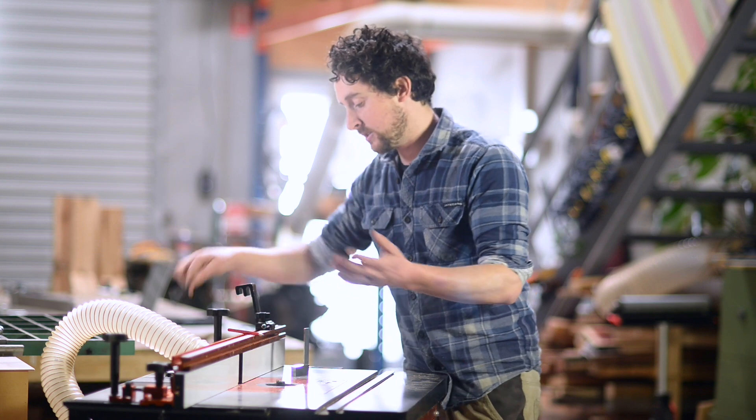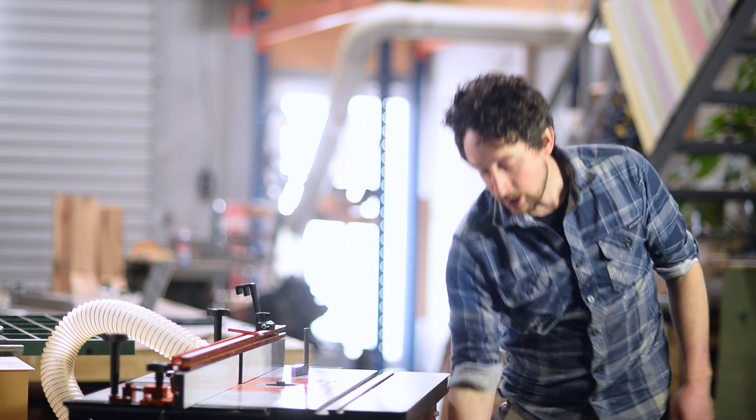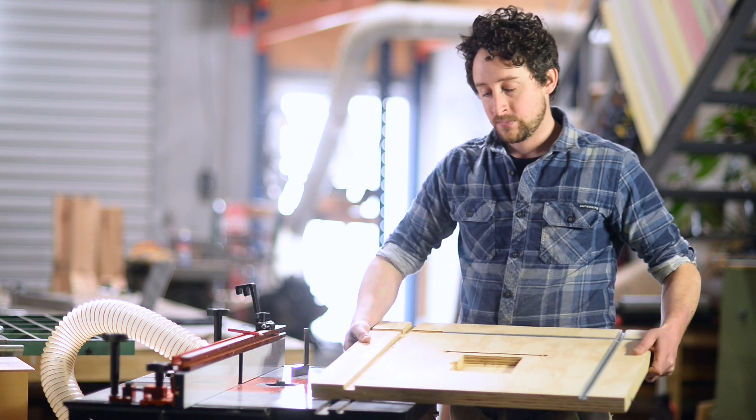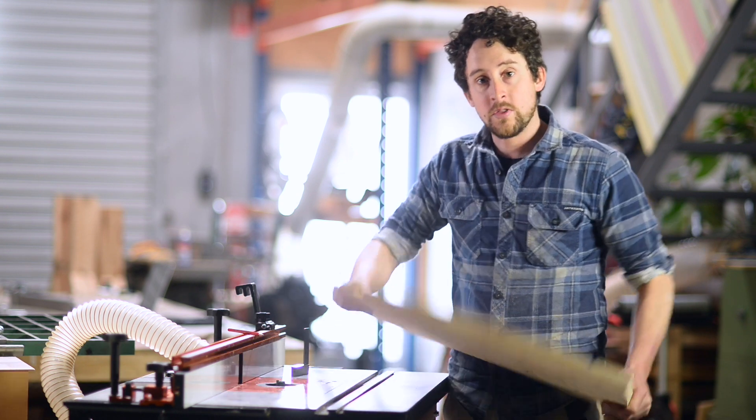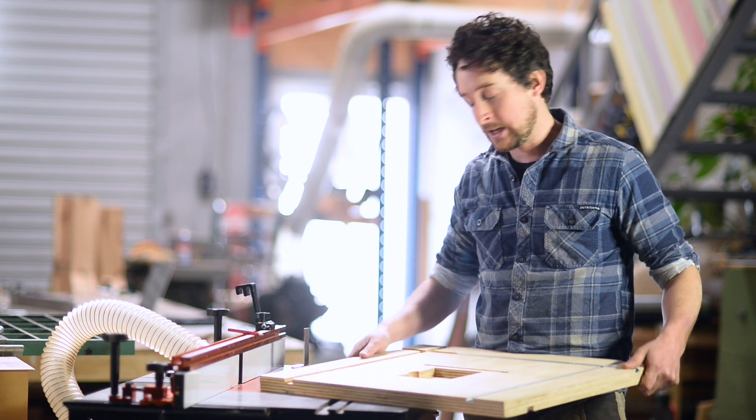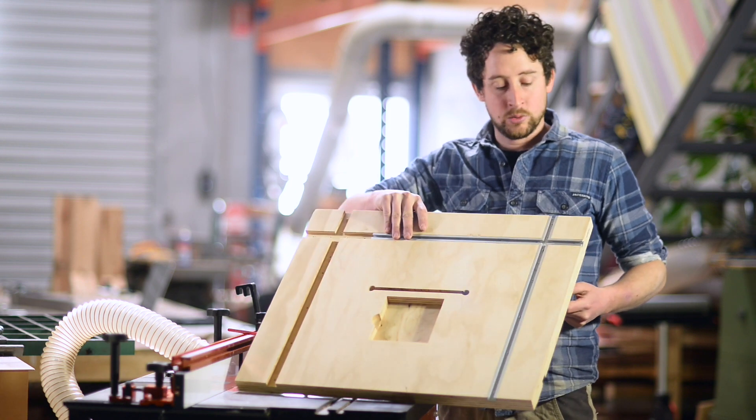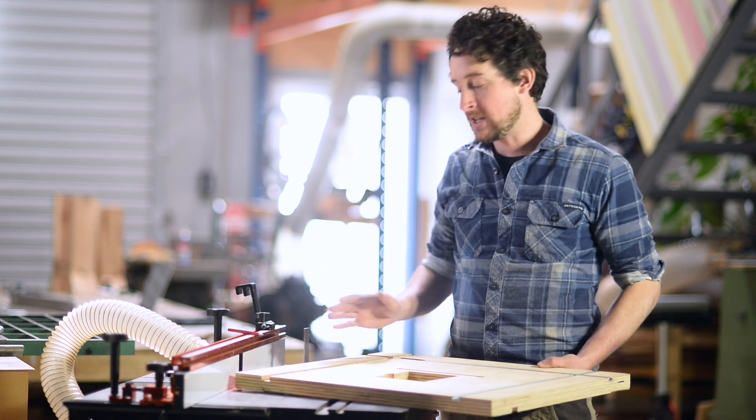So once you've set the fence and the height, you're just going to need to run it through on all three sides. Remember that we are routing the top face, not the bottom as I did on my first cut because I wasn't thinking. So you're going to do three passes on the top face. They will look very much like this. There's nothing really to it.